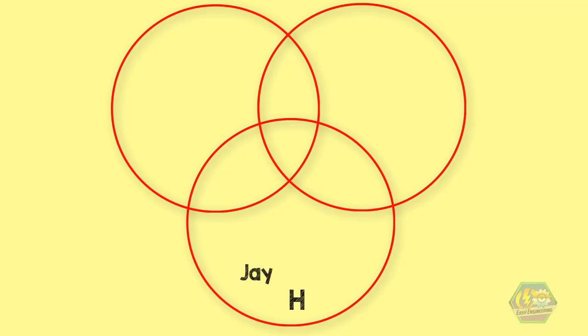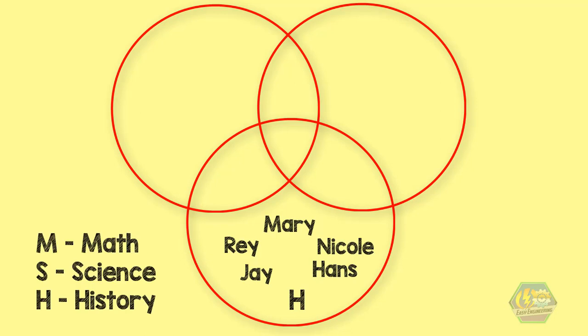Suppose Jay, Ray, Hans, Nicole, and Mary like history. But let's be more mathematical and use a capital letter for each set. Let M be the set for students who like math. Let S be the set for students who like science. And let H be the set for students who like history. Now, the Venn diagram would look like this.